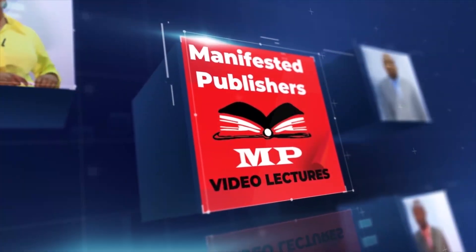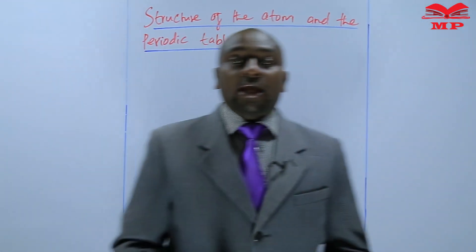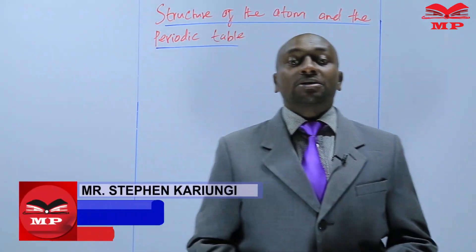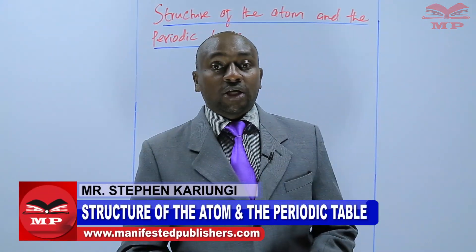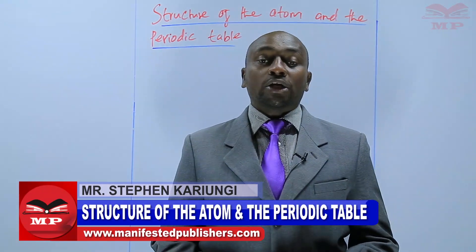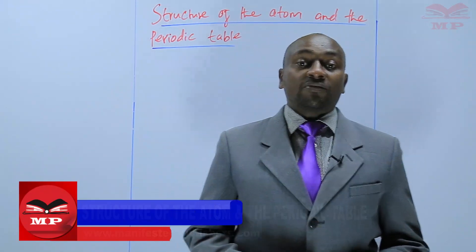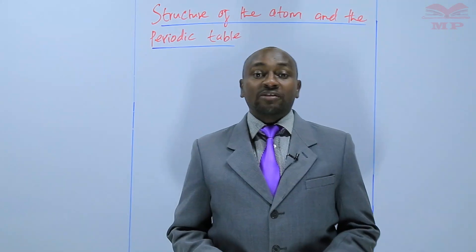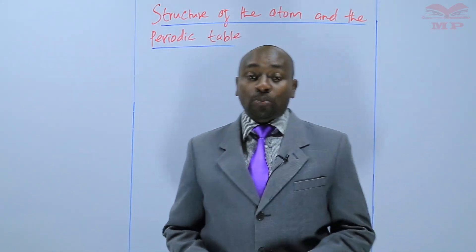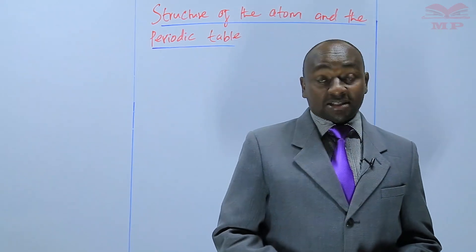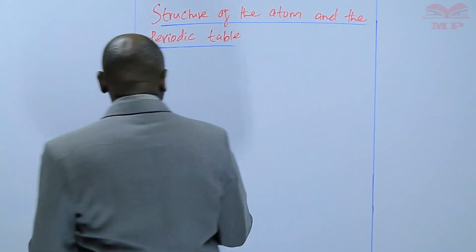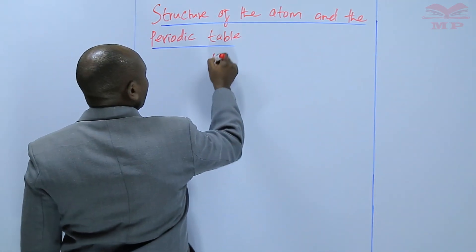Welcome to Manifested Publishers. Hello learners, welcome to our today's chemistry lesson. My name is Stephen Karyongi. Today we continue with our topic of structure of the atom and the periodic table. Specifically, I want us to define some terms, and these terms include atomic number, mass number, and isotopes. We'll start with the atomic number.